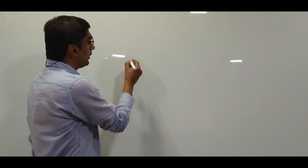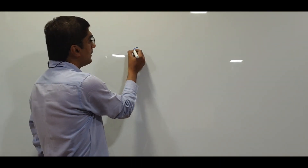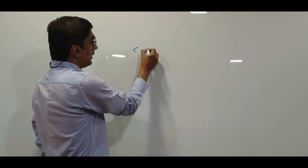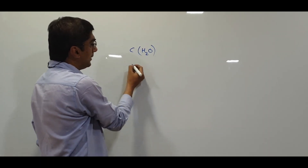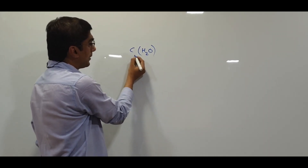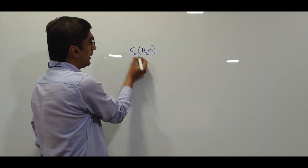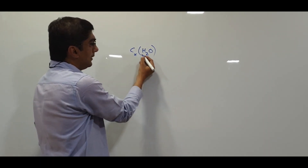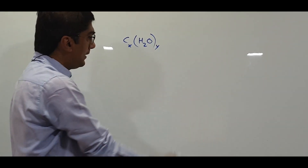Let's start with the revision of our topic, Carbohydrates. So what are carbohydrates? Carbohydrates are the hydrates of carbon. So its formula would be CH2O, and if the number of carbon atoms are X, the number of water molecules would be Y.